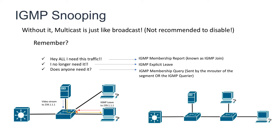If you happen to have two switches, you may run into a situation where the IGMP join does not get to the upstream switch. This happens on some devices because they do not send the IGMP join through all ports — they only send it through ports called M router ports. An M router port is a port of a switch where it receives either a PIM hello packet or an IGMP membership query.